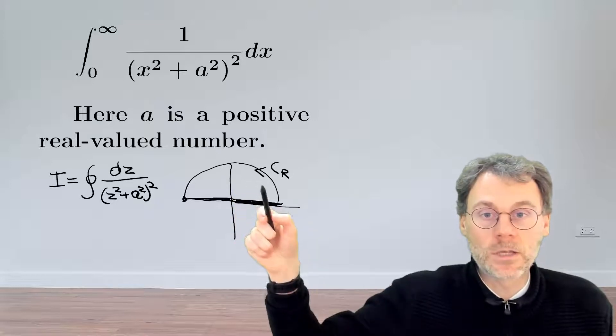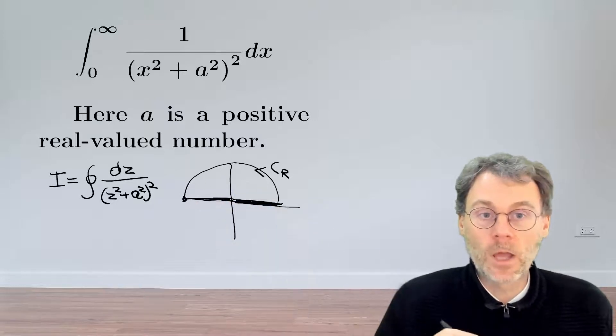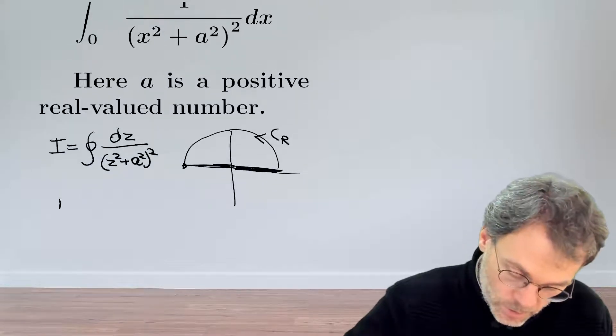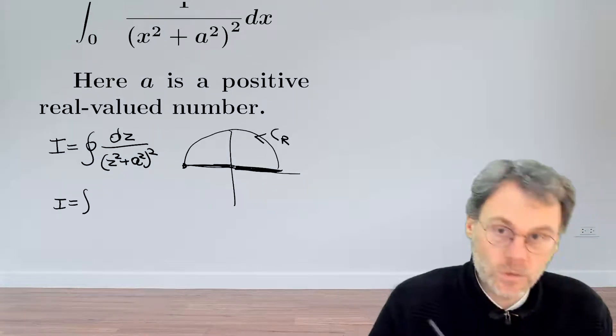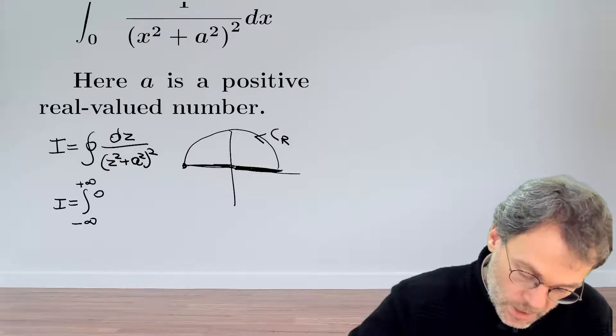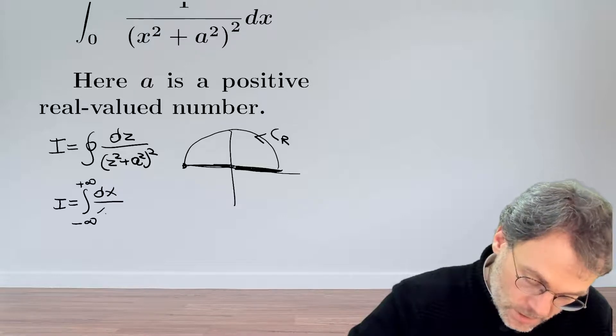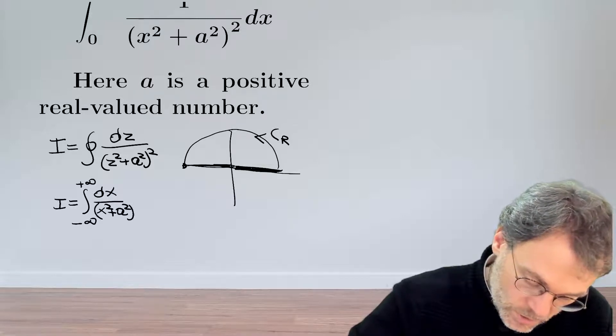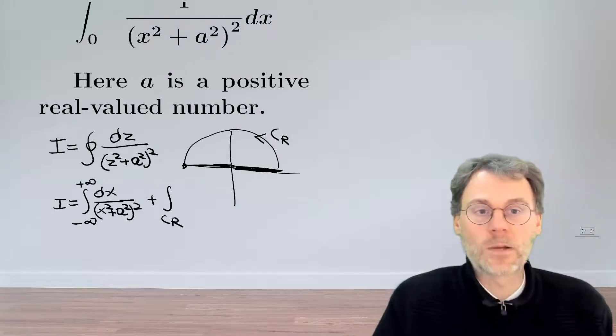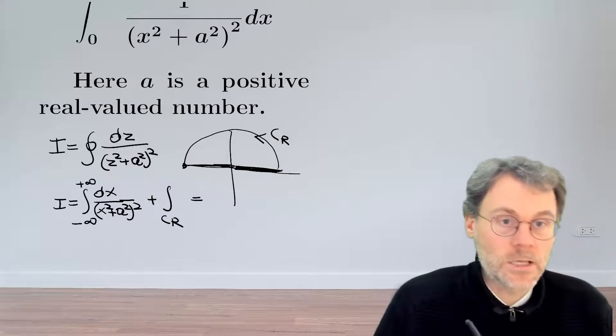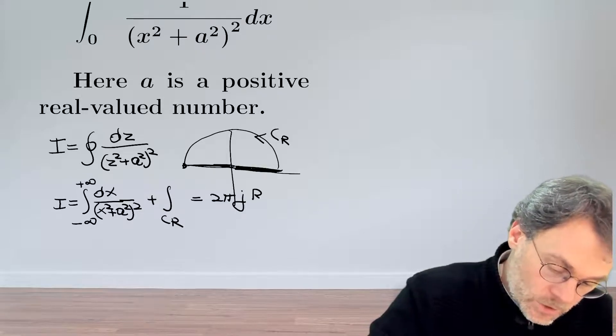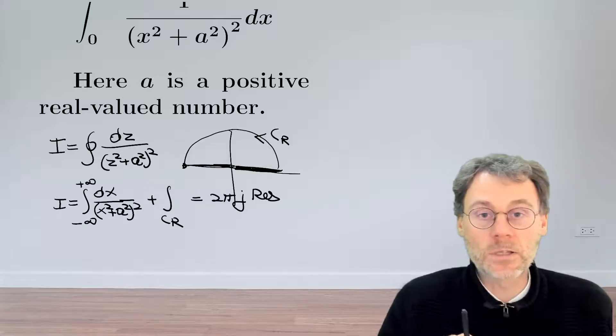So we know that our integral here can be broken apart into two parts. So first of all we have the integral from minus infinity to plus infinity, and then because we are on the real axis again we can write this as follows. And then we have a contribution from this circular segment C_R, and that is equal to 2πj times the residue of all the singularities that are inside the contour.